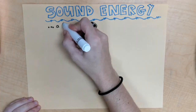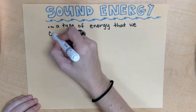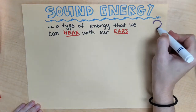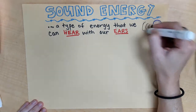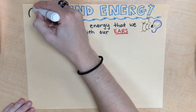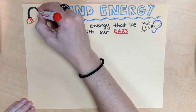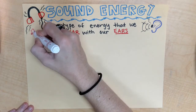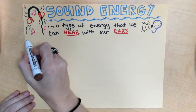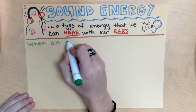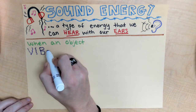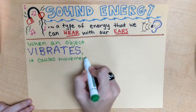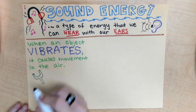When we talk about sound energy, that's just a type of energy that we can hear with our ears. When an object vibrates — maybe it hits something or something comes in contact with it — it causes movement in the air around that object, and that creates sound waves. Those sound waves travel through the air to our ears, and that's how we can hear sound.